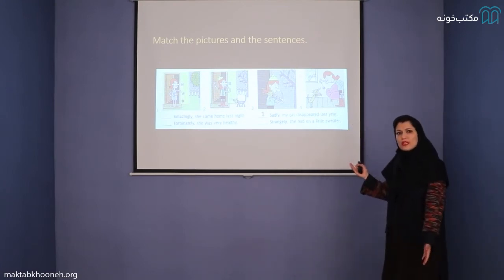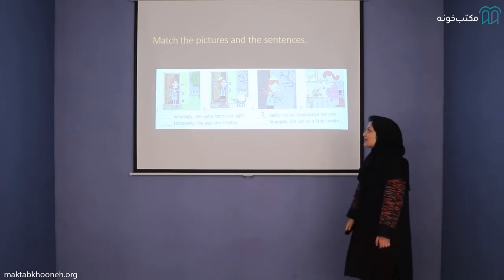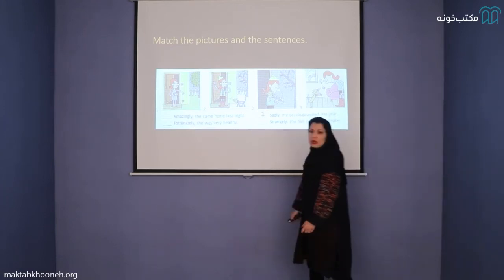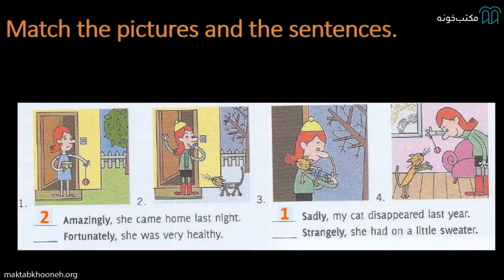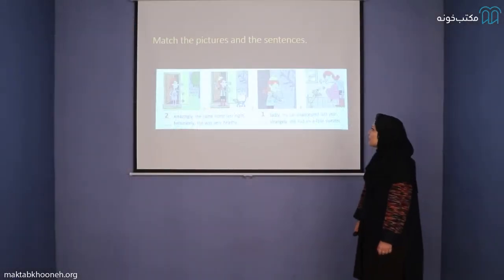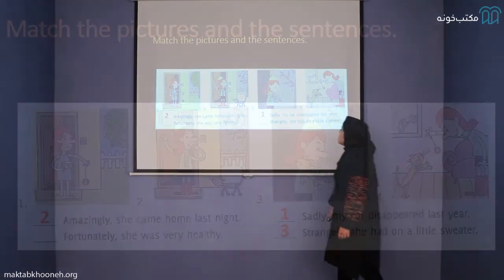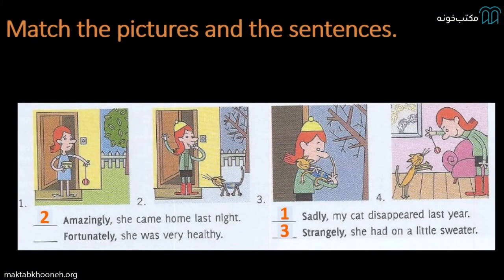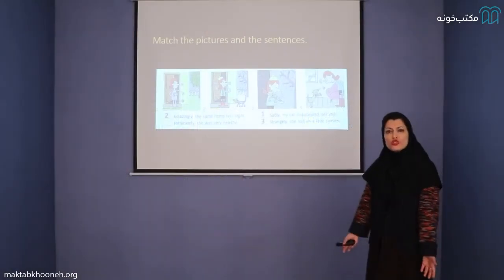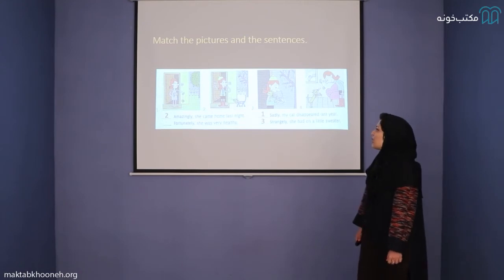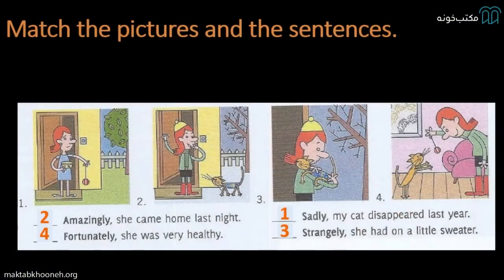Sadly — or we can also say unfortunately — my cat disappeared last year. Which one is number two? In the second picture, she has found her cat again, so this is good news. Amazingly, she came home last night. Number three, the cat has got a sweater on. Strangely, she had on a little sweater — that was unusual for the owner of the cat. And finally, fortunately, the cat was very healthy.